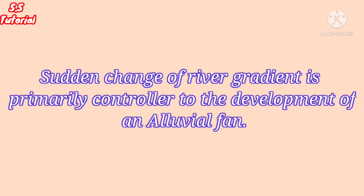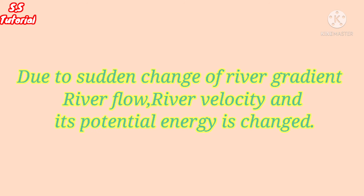Second, sudden change of river gradient. Sudden change of river gradient is the primary controller of the development of an alluvial fan. Without a sudden change of river gradient, it is impossible to develop an alluvial fan. Due to the sudden change of river gradient, river flow, river velocity, and its potential energy decrease, and the river starts to deposit its load.